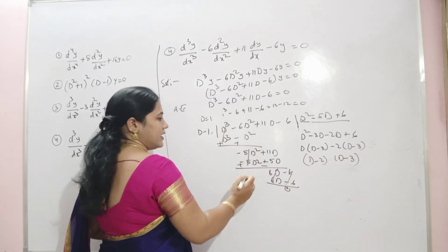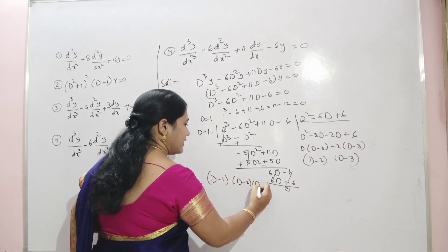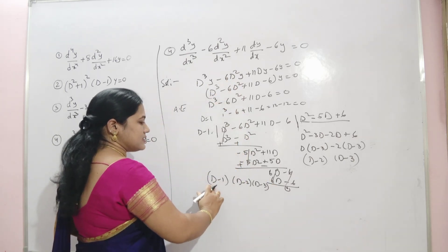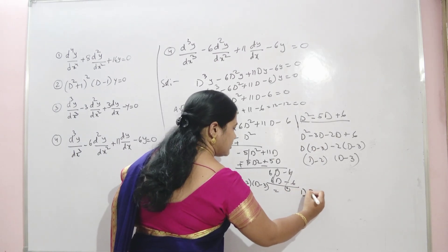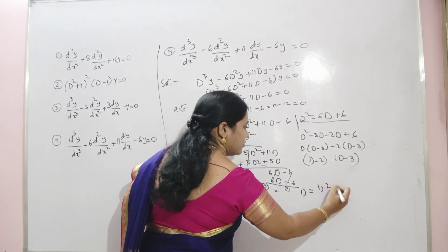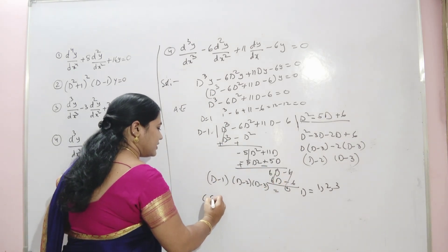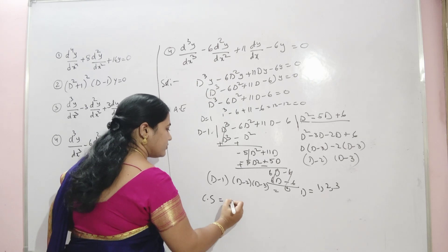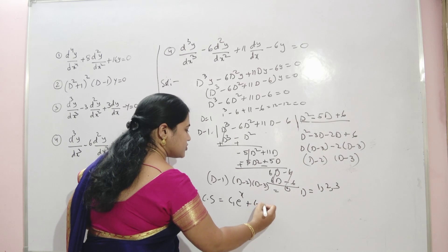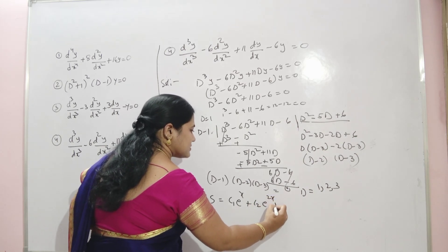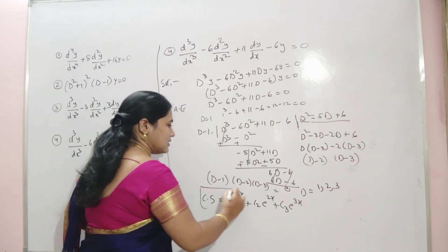The roots D = 1, 2, 3 are real and distinct. Therefore the complete solution is: y = c₁eˣ + c₂e^(2x) + c₃e^(3x). This is the solution.